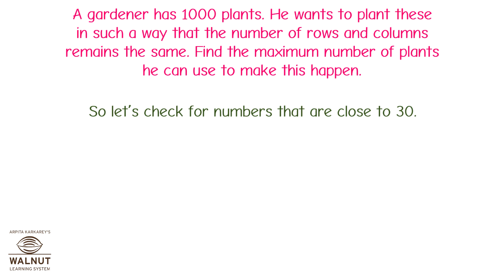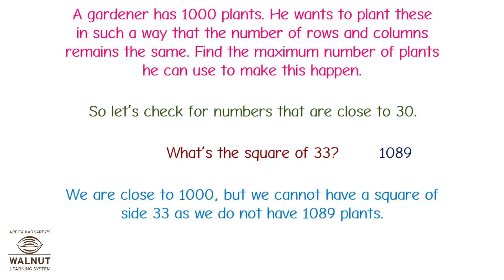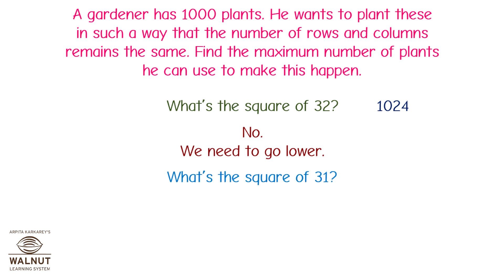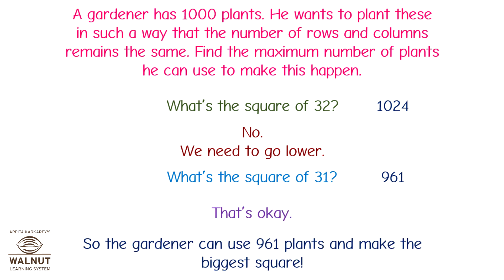1000 is closer to 900 than 1600, so let's check numbers close to 30. The square of 33 is 1089 — we are close to 1000 but we cannot use side 33 as we don't have 1089 plants. The square of 32 is 1024 — no, we need to go lower. The square of 31 is 961 — that's okay. So the gardener can use 961 plants and make the biggest square.